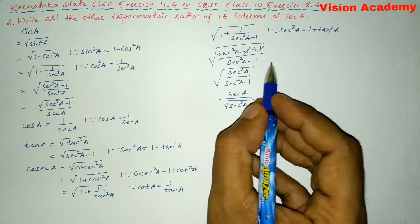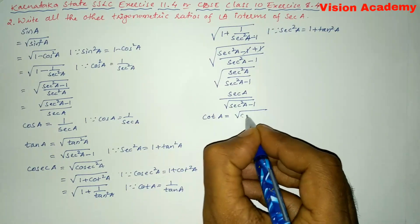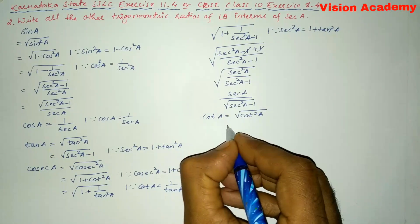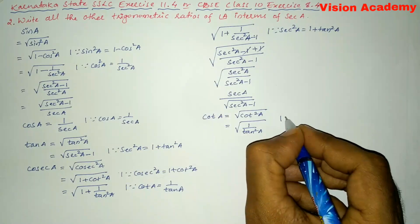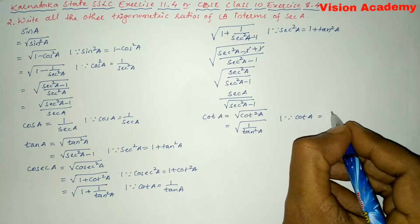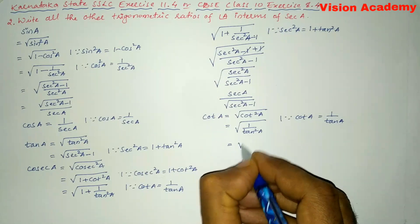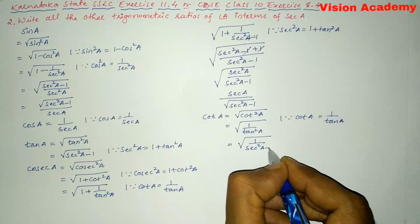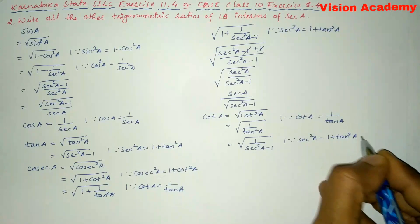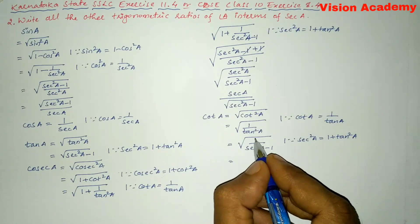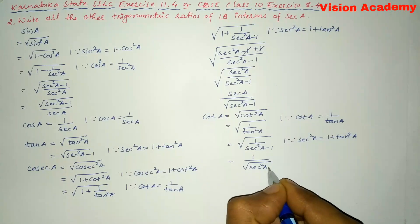Now let us move on to the last trigonometric ratio, that is cot A. Cot A = square root of cot²A = square root of 1 divided by tan²A, since cot A = 1/tan A. Writing tan²A as sec²A - 1, and taking 1 out of the square root, we get cot A = 1 divided by square root of (sec²A - 1).